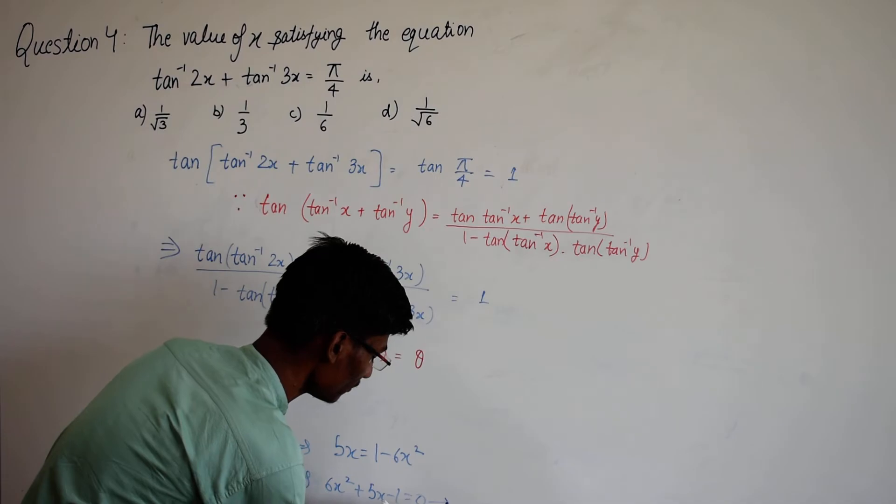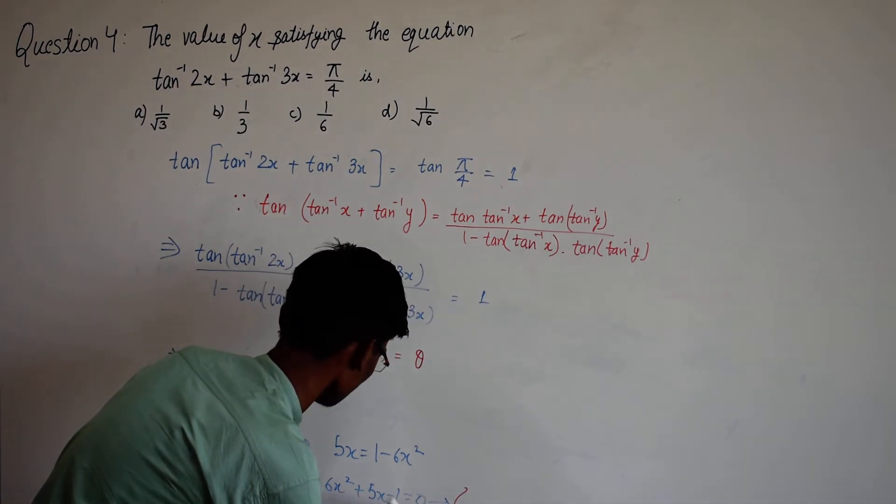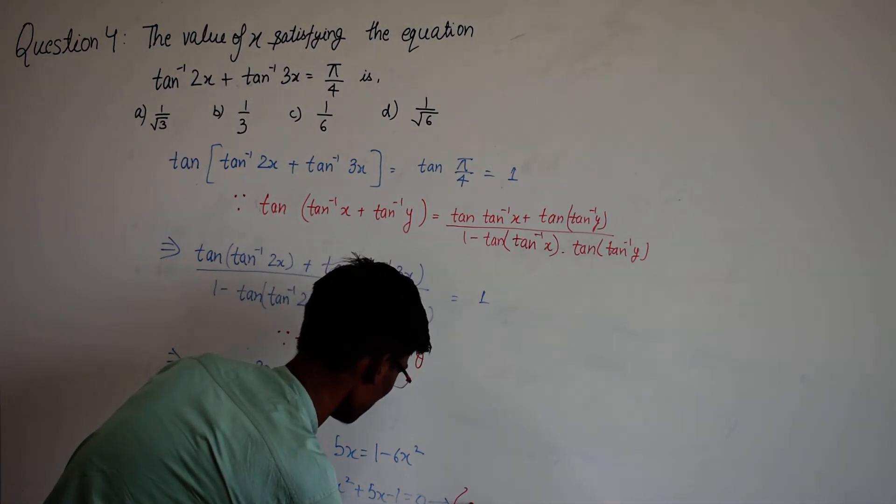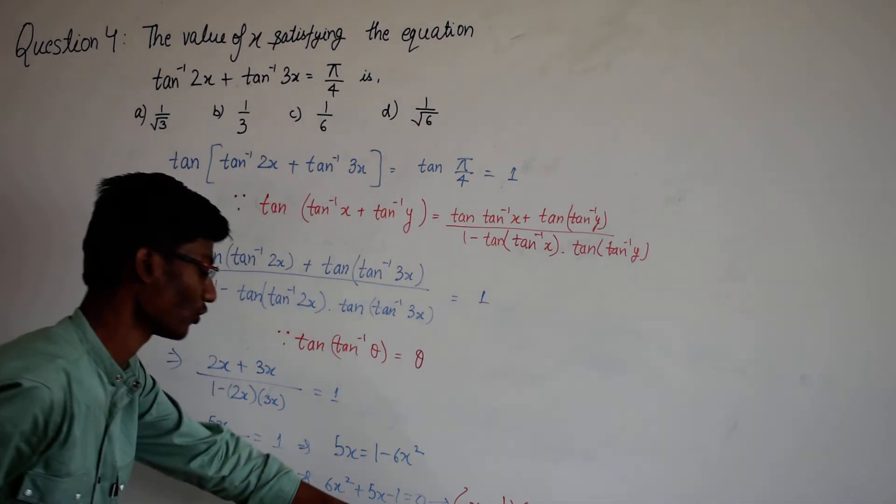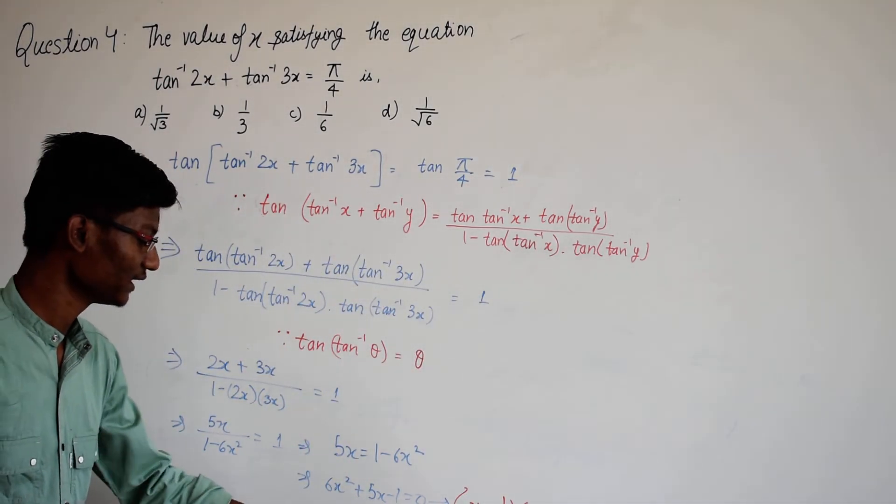The factors of this we can write it as x minus 1 by 6 and x plus 1. So from here we will get these two roots.